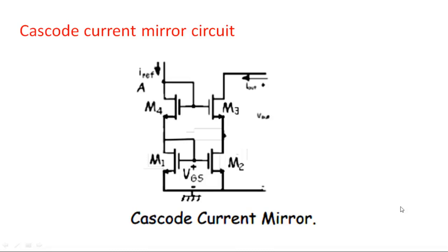In this video I am going to explain about the cascode current mirror circuit, a regulated cascode current mirror circuit, and the configuration used to get a minimum Vmin and improved Rout. These three configurations we are going to see in this video.